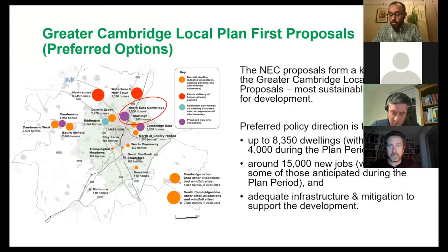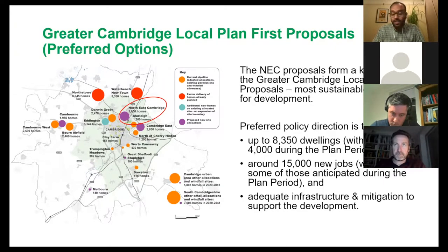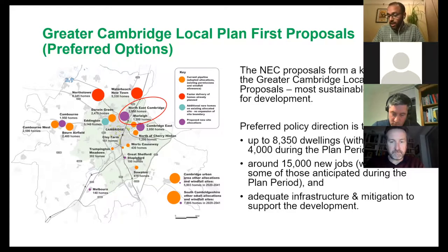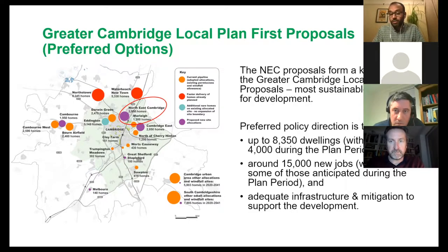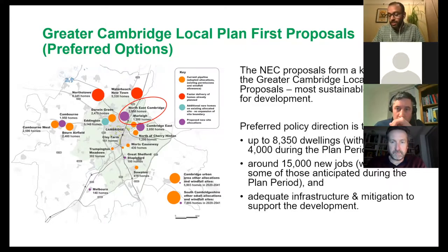North East Cambridge forms an important part of the emerging Greater Cambridge Local Plan. The Local Plan evidence identifies that North East Cambridge is the most sustainable location for development in Greater Cambridge based on its location and good transport accessibility. The preferred policy direction is to provide around 8,350 new homes and around 15,000 new jobs, along with the necessary mitigation and infrastructure to support the development.